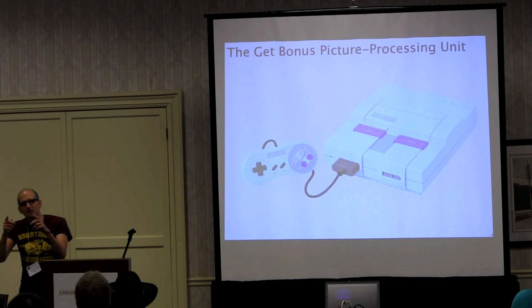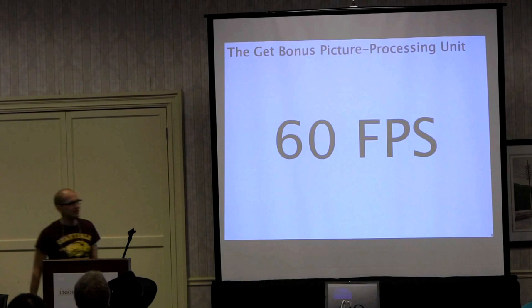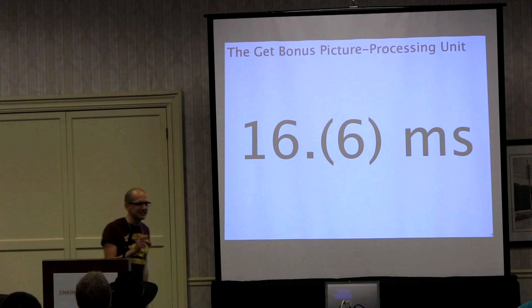I misspoke before — Call of Duty runs at 60 frames per second, but Battlefield and Halo run at 30. Like Call of Duty, GetBonus runs at 60 frames per second all the time no matter what. That means you have 16.6 milliseconds to generate a frame, do all your logic, and spit it out.